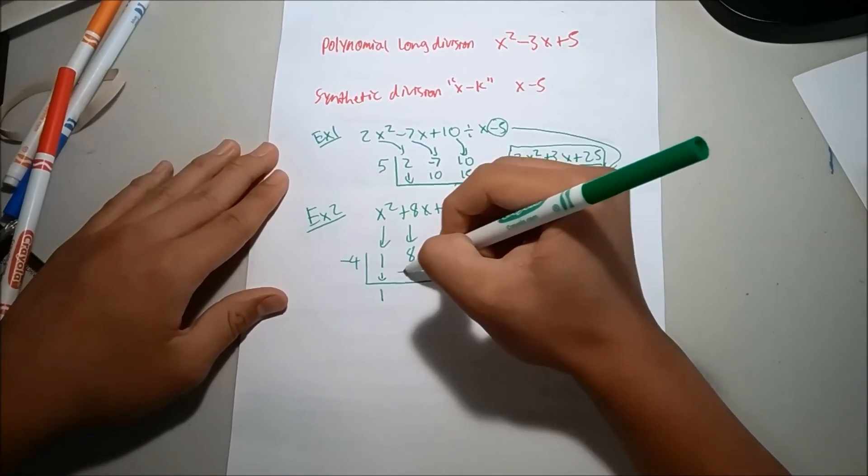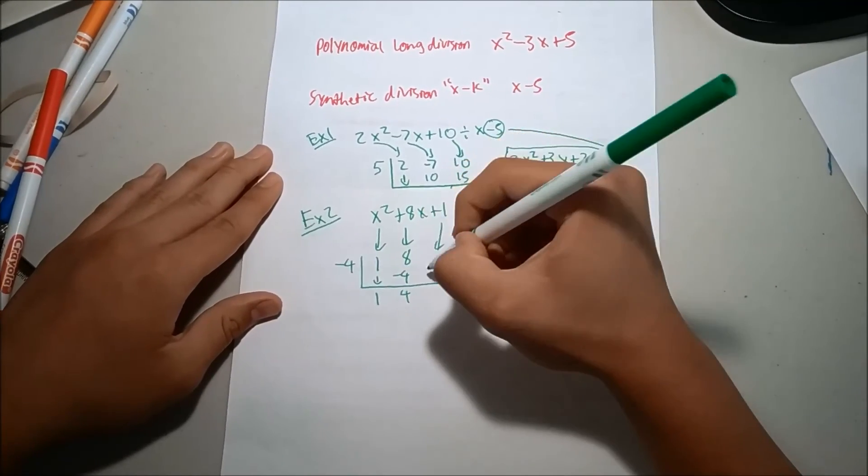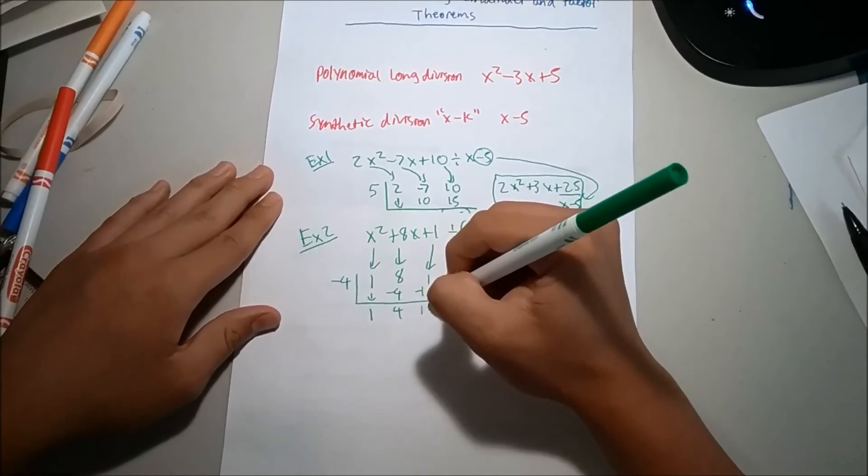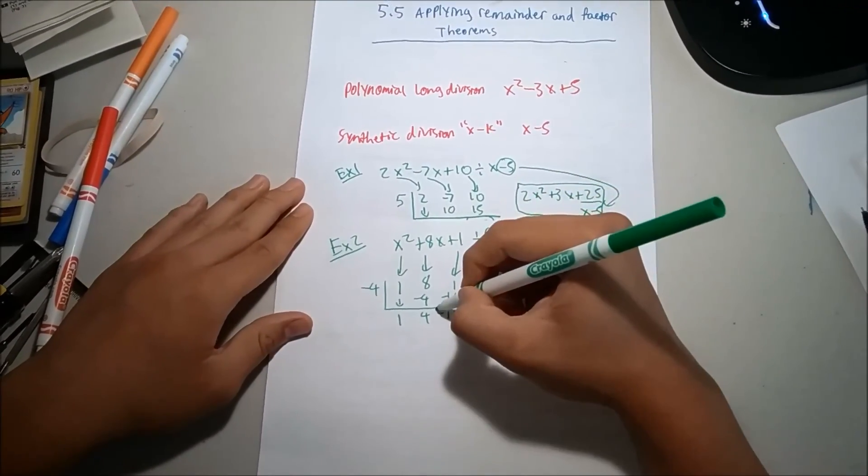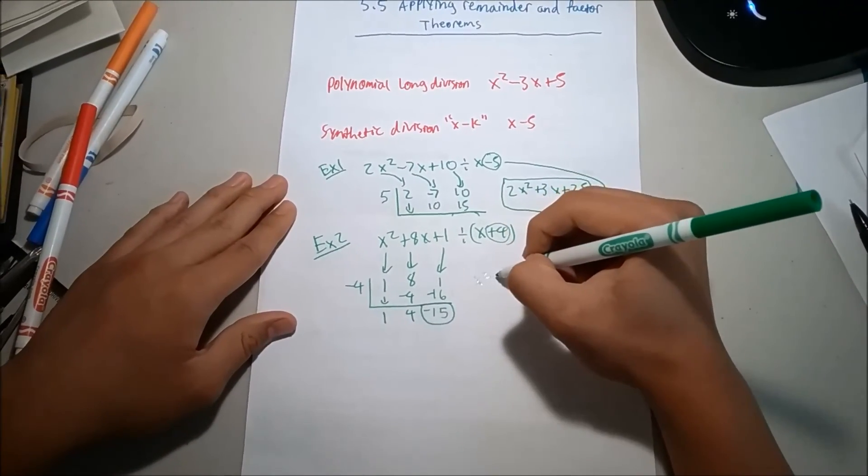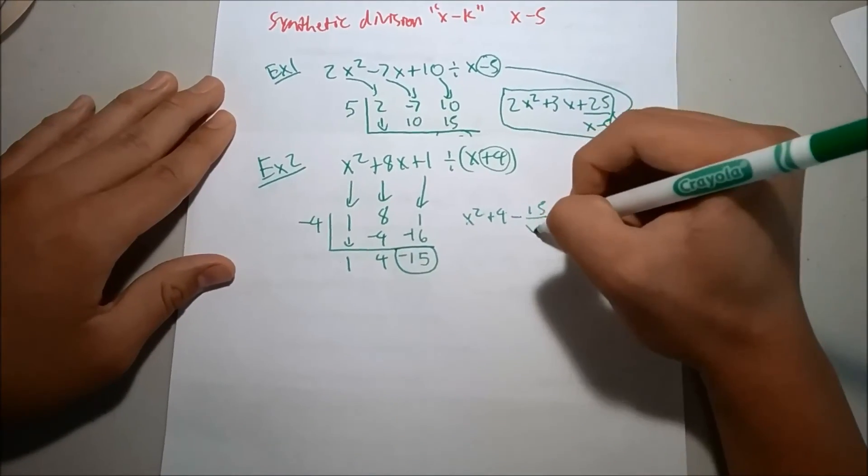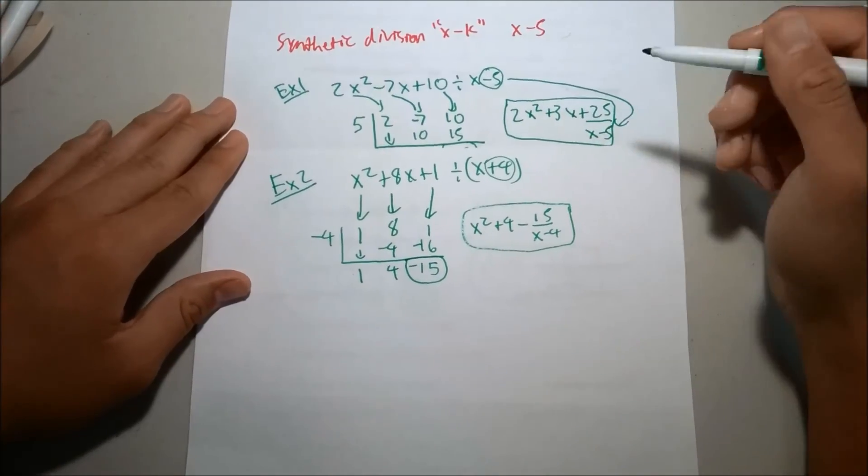Now I bring 1 down. Negative 4 times 1 is negative 4. 8 plus negative 4 is 4. 4 times negative 4 is negative 16. 1 plus negative 16 is negative 15. And that's the remainder. So, x plus 4 minus 15 over x plus 4. And that is the answer for example 2.